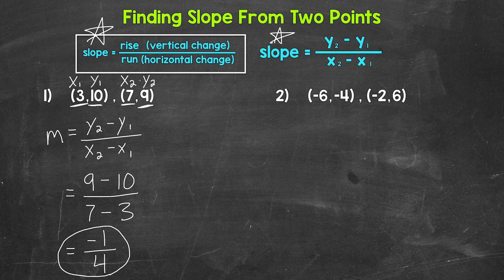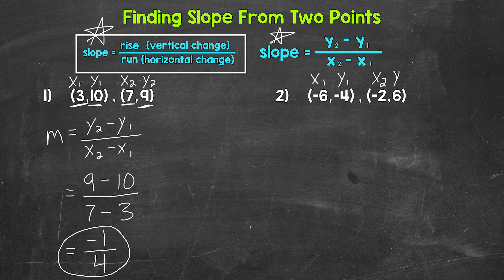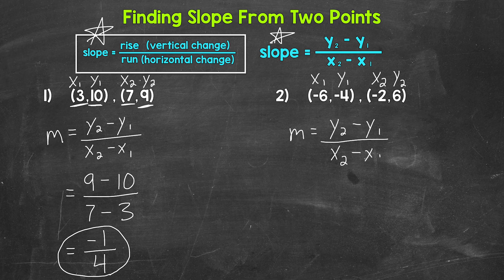Let's move on to number 2 where we have (-6, -4) and (-2, 6). Again, we're going to work from the left point to the right point. So (-6, -4) is going to be x1 and y1, and (-2, 6) is going to be x2 and y2. Slope equals y2 minus y1 over x2 minus x1.